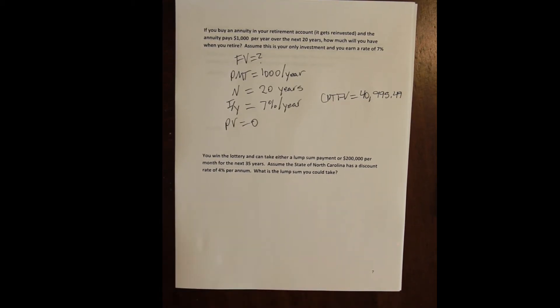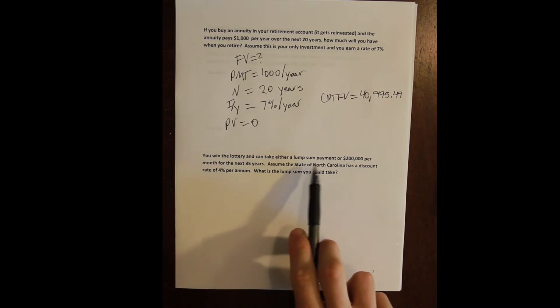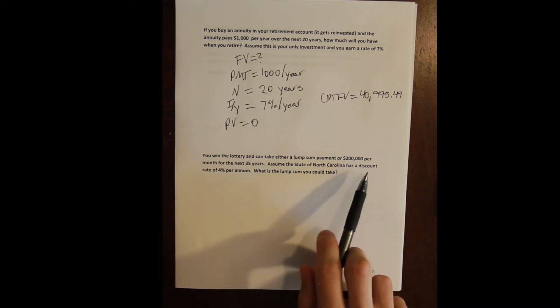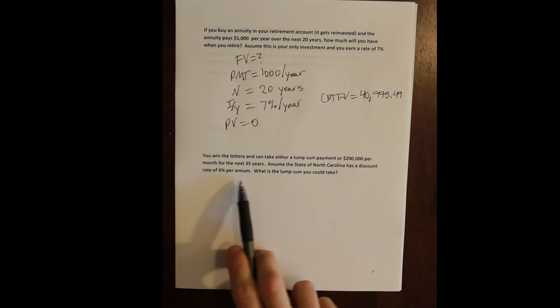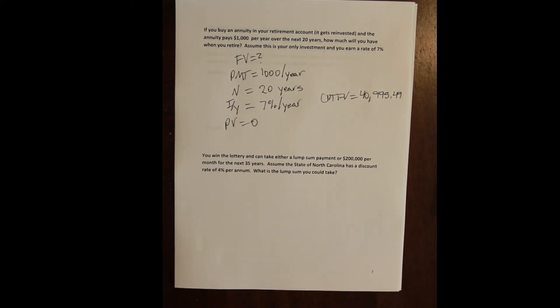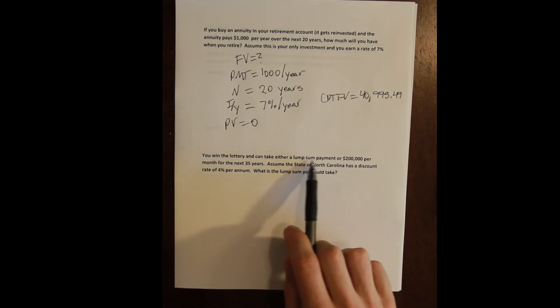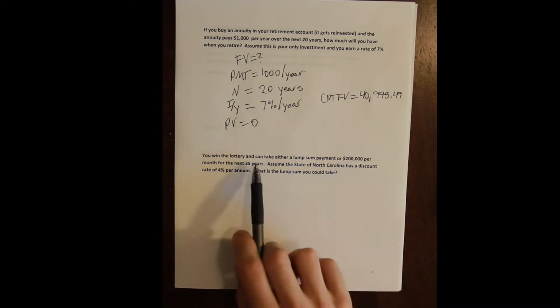So let's say you win the lottery. And for those of you that don't know, when you win the lottery you get a choice. You get a choice between a lump sum and an annuity, a monthly payment over the next 35 years. And the lump sum is the present value of that annuity.